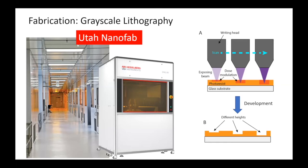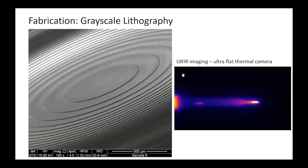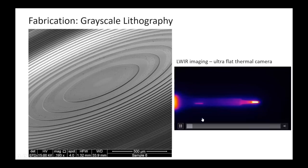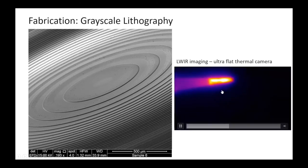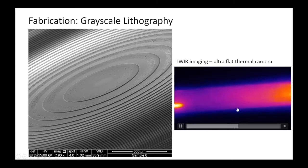All of these are fabricated at the Utah Nanofab using grayscale lithography. This is a scanning electron microscope image of a fabricated long-wave IR lens on silicon, and this is how it is being used coupled with a FLIR long-wave IR sensor to create a flat thermal camera. This is a soldering iron tip which is very hot — so you can see the thermal imaging capability.